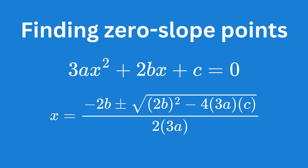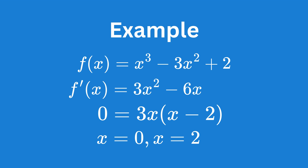These solutions for x will give us the coordinates of the turning points. Let's go through an example. Suppose we have the function shown on screen. Its first derivative is 3x squared minus 6x. Setting the derivative equal to zero, we can factorize this and quickly find that x is equal to zero or two.